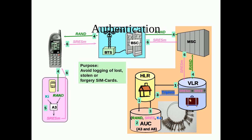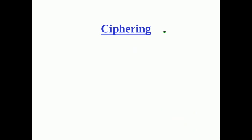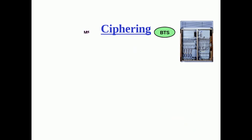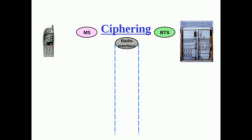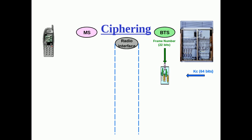If they match, this means the user has been authenticated as a valid user. Then a ciphering mode command is given to the MSC, and this command goes to the BSC, then to the BTS, and then to the mobile station. After that, the ciphering of data between the BTS and the MSC starts. Ciphering is done between these two parts of the network — BTS and MSC — meaning both of them have the same ciphering key.